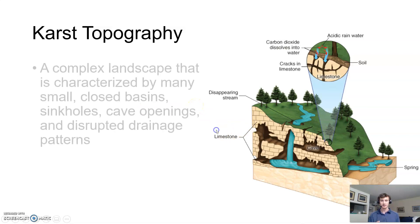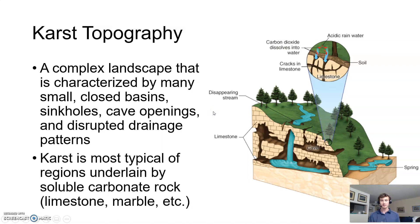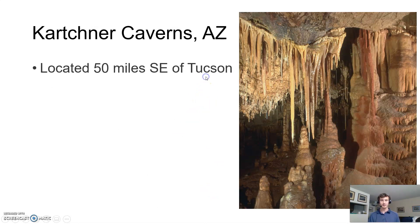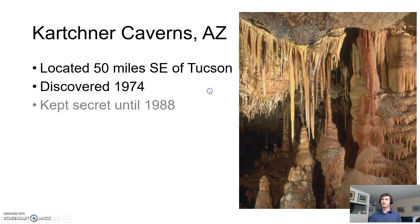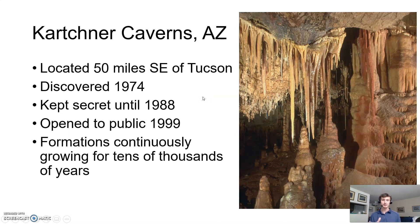Karst topography is a complex landscape incorporating both rock and all of the water in the system. We have many small closed basins, sinkholes, cave openings, caverns, and unusual drainage patterns. This is typical of any region where the bedrock is a soluble carbonate rock — so limestone or marble, which are both carbonates. One example in Arizona is Kartchner Caverns, about 50 miles southeast of Tucson, not discovered until 1974 and not revealed publicly until about 1988. It didn't open to the public until about 1999, even though it took many thousands of years to form.